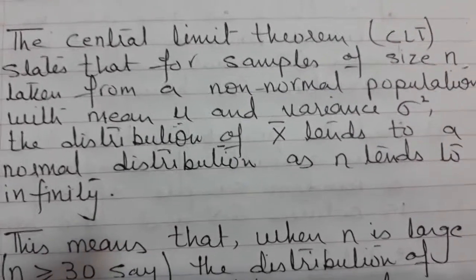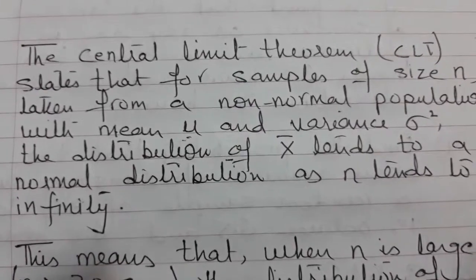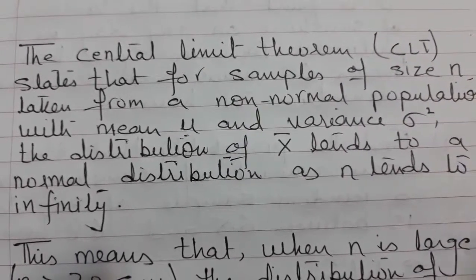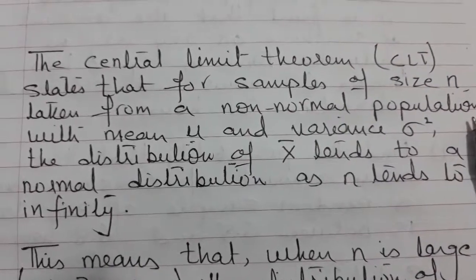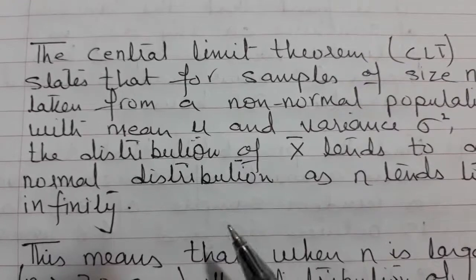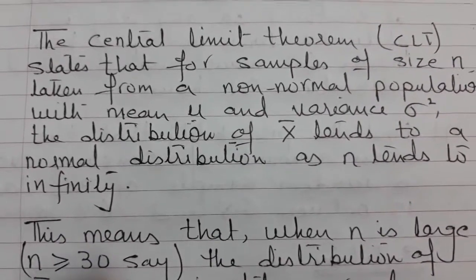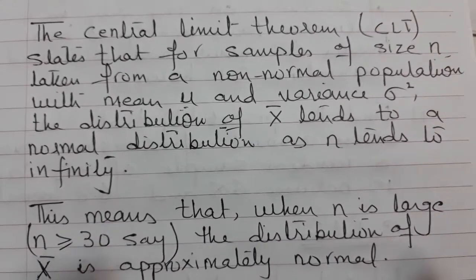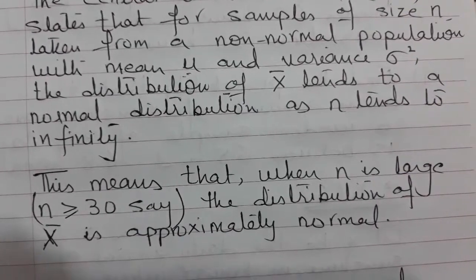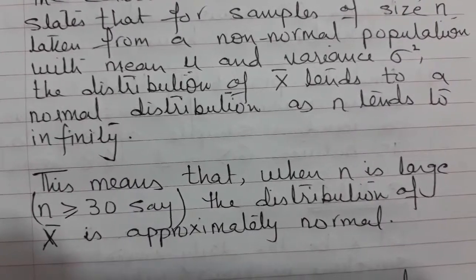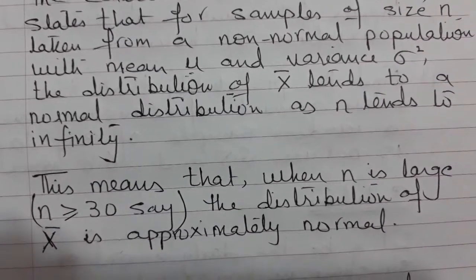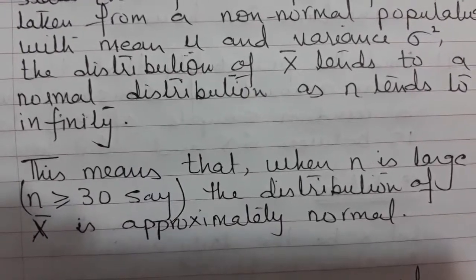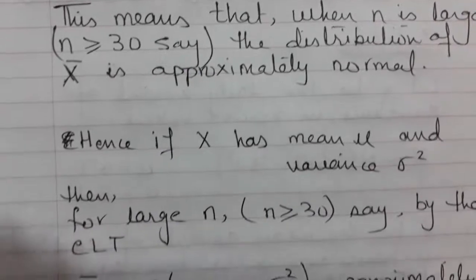The Central Limit Theorem states that if you take a sample of size n, the requirement is that n should be greater than or equal to 30. If the sample size is greater than 30, then a sample taken from a non-normal population will give you an approximately normal distribution. When you apply the Central Limit Theorem, your distribution of sample mean is approximately normal.